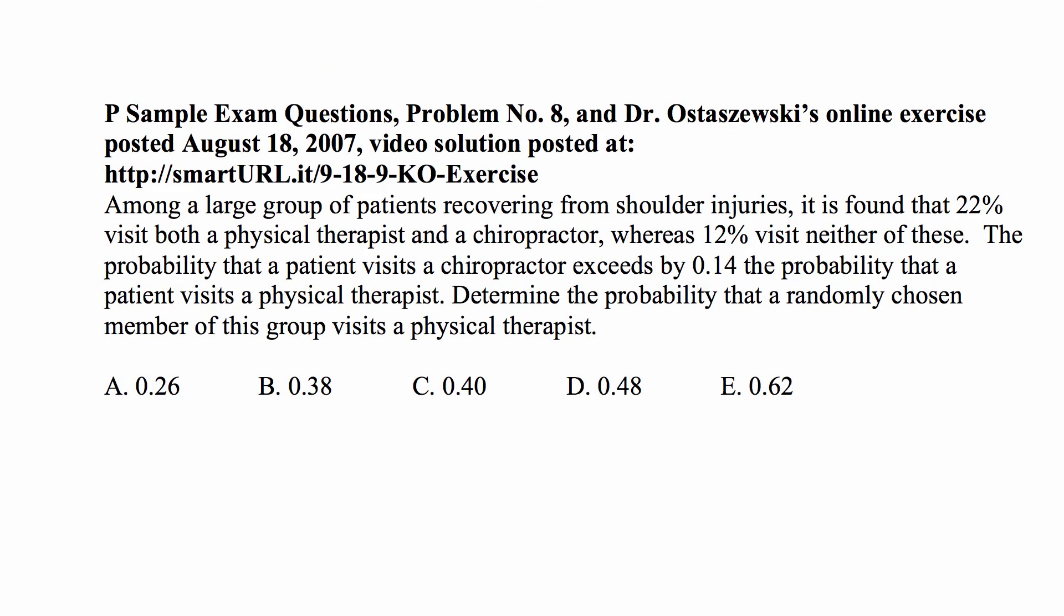Here's a problem for today. Among a large group of patients recovering from shoulder injuries, it is found that 22% visit both a physical therapist and a chiropractor, whereas 12% visit neither of these. The probability that a patient visits a chiropractor exceeds by 0.14 the probability that a patient visits a physical therapist. Determine the probability that a randomly chosen member of this group visits a physical therapist.